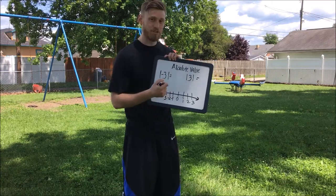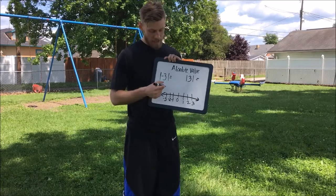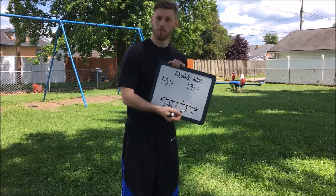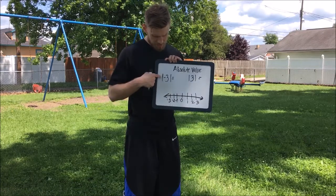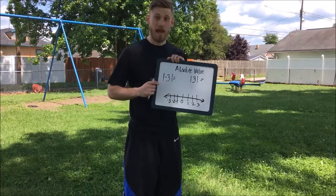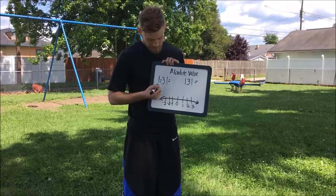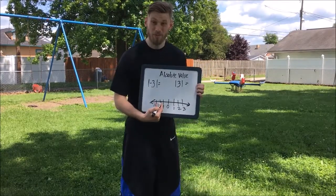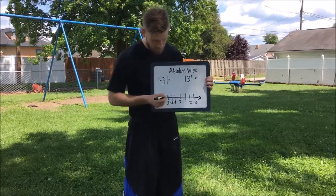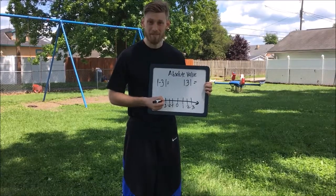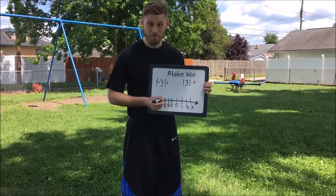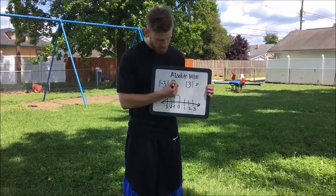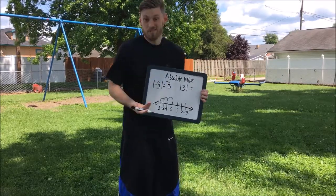Absolute value is actually what that stands for — how many hops the number is from zero on a number line. These bars right here represent absolute value. So, what this means is it says negative three. We're going to go to this number line, which I already put there for you. We're going to go to negative three. How many hops is negative three away from zero? One, two, three. So, the absolute value of negative three is three.